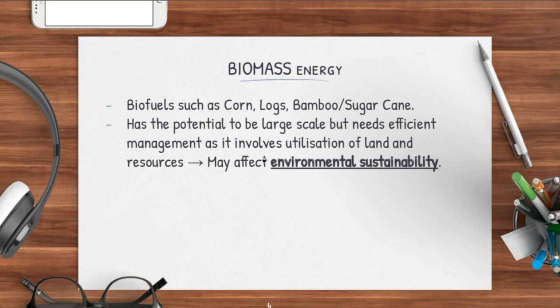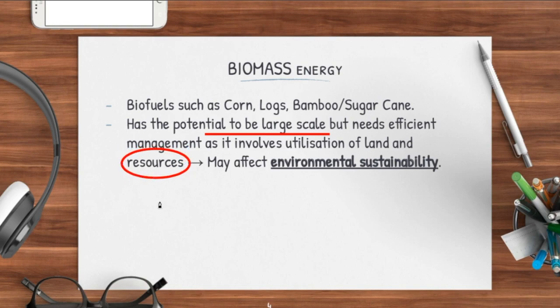Biomass energy has got the potential to be large scale, but it needs efficient management as it involves a lot of resources. By using up a lot of corn, you notice that there's a trade-off, because if corn is used for energy instead of food, this may actually affect environmental sustainability.